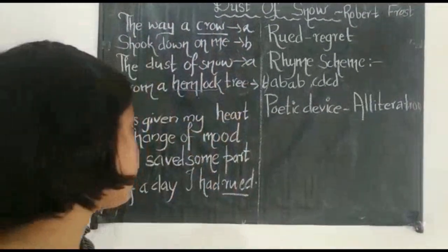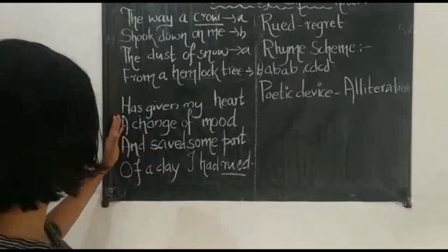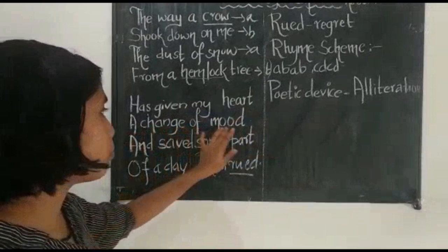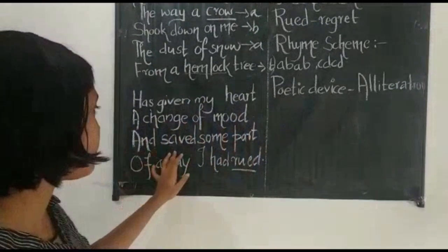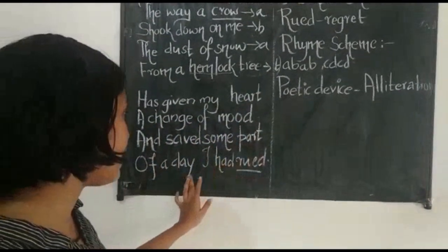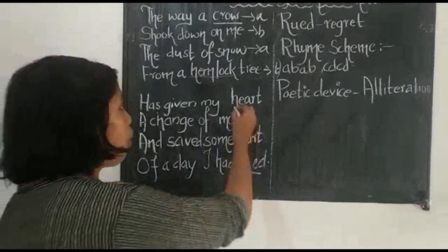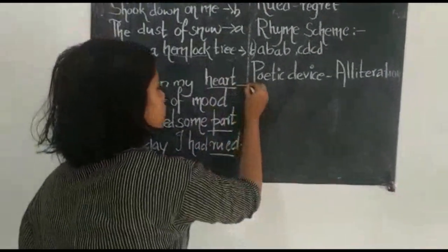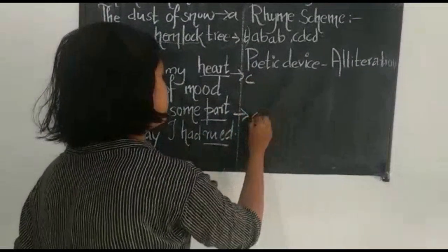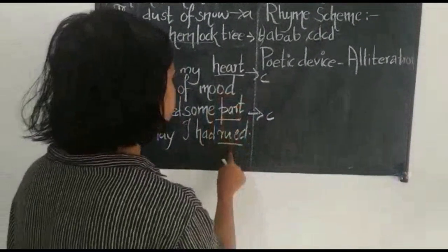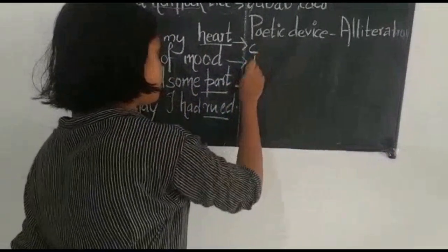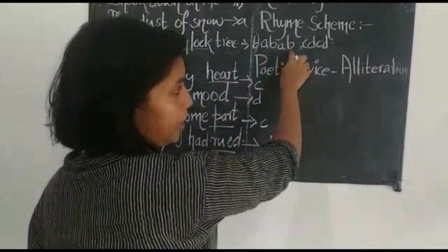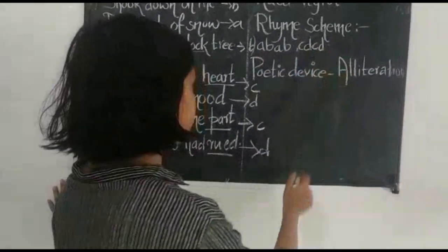That's how you find the rhyme scheme. The second stanza: 'Has given my heart a change of mood and saved some part of a day I had rued.' Heart and part are rhyming words — C C. Mood and rued are again rhyming words — D D. So the rhyme scheme of the full poem is A B A B and C D C D.